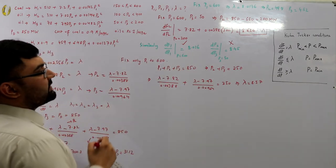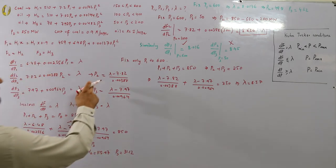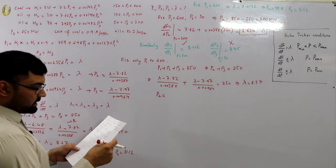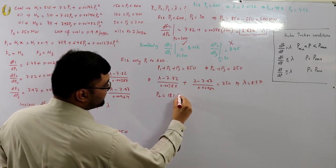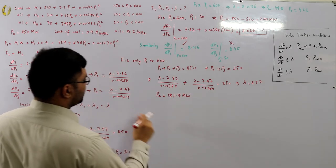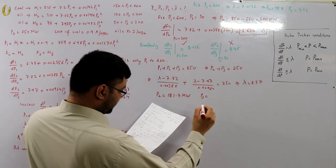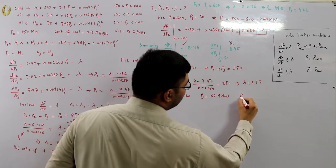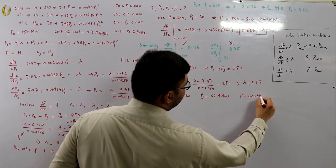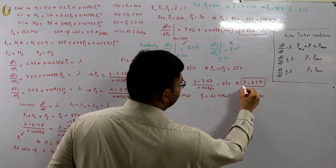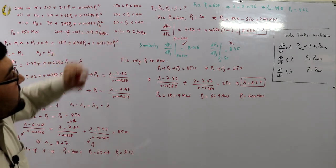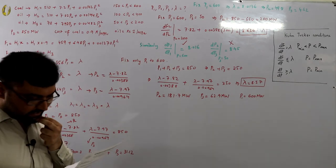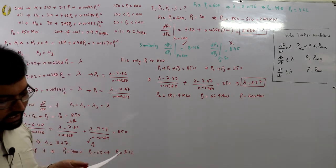With λ = 8.57: p2 = 181.7 MW and p3 = 62.9 MW. Combined with p1 = 600 MW, the total is 844.6 ≈ 850 MW. All three values lie within their respective economic ranges.